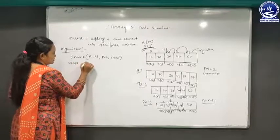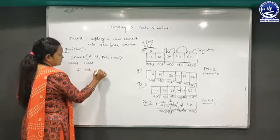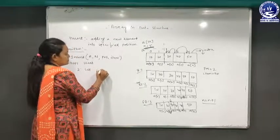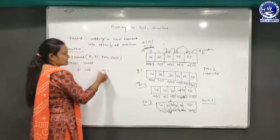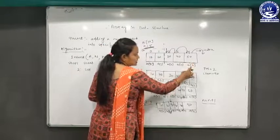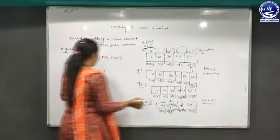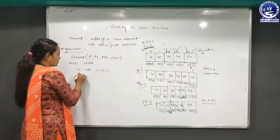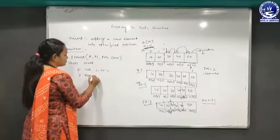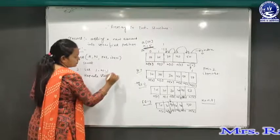Step 1: Start. Step 2: Set j equals to N minus 1. The variable j is a counter used to track how many times the loop executes. With N equals 5, j is set to 4, locating at a[4]. Step 3: Repeat steps 4 and 5 while j is greater than or equal to pos.